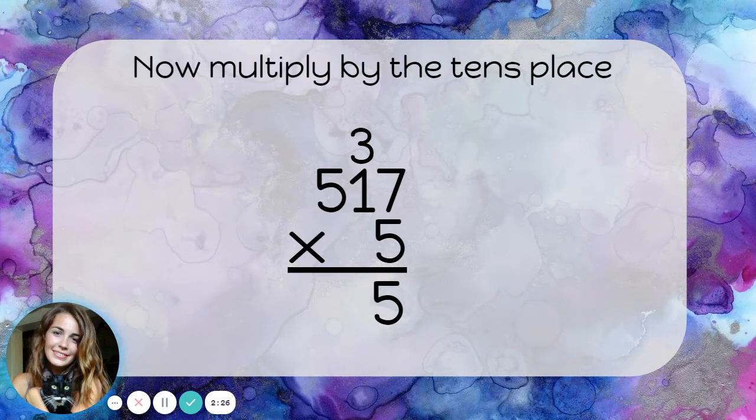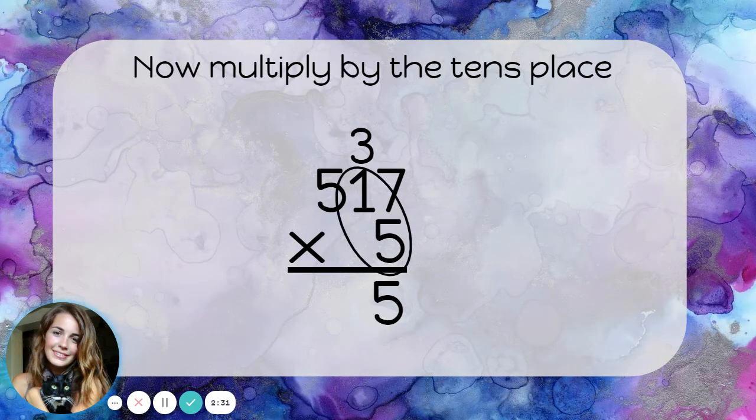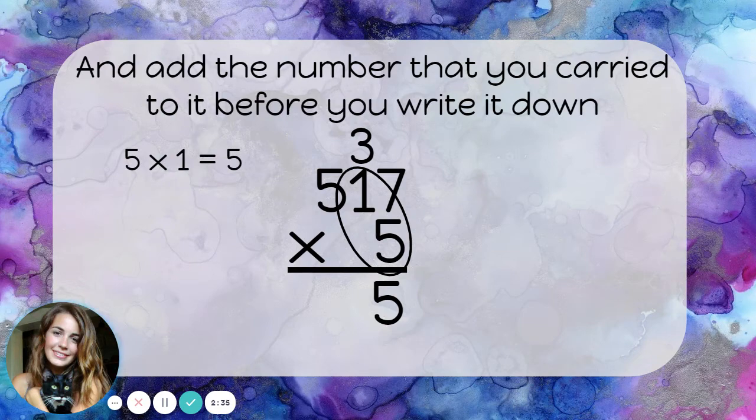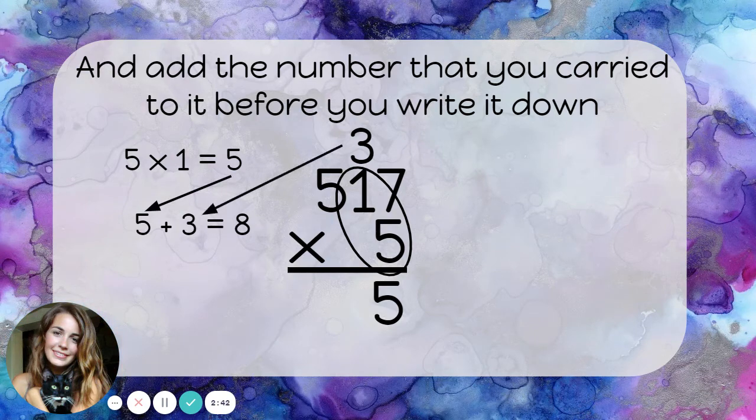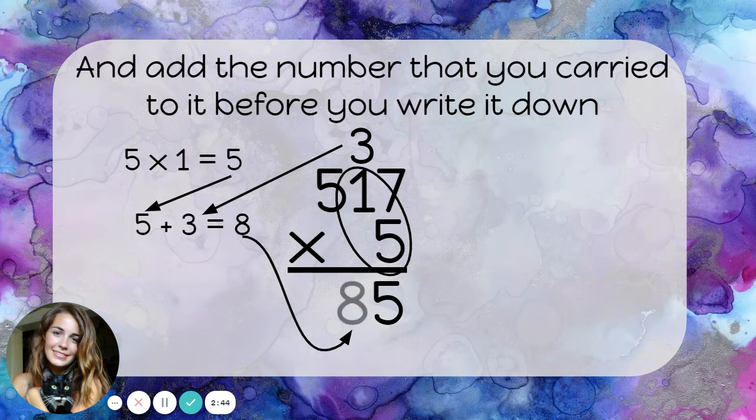Now, I'll multiply by the tens place. 5 times 1 is 5. But before I write that down, I need to add the number that I carried to it. 5 plus 3 is 8. That can go in the tens place of my answer.